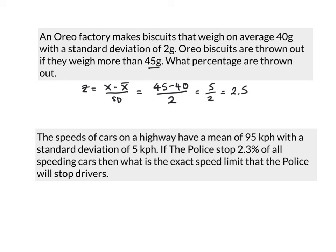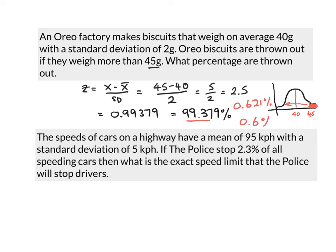So we've got 5 over 2, which is 2.5. So we need to find 2.5. The Z-score, the percentage for that Z-score is 0.99379, which equals 99.379%. Remember the question is asking for the ones that weigh more than 45. So there's the mean of 40, there's the cutoff point. These are the ones that are thrown out, greater than 45. So we've got to do 100 minus that and we get 0.621%. So about 0.6% of Oreos made weigh more than 45 grams and are thrown out.